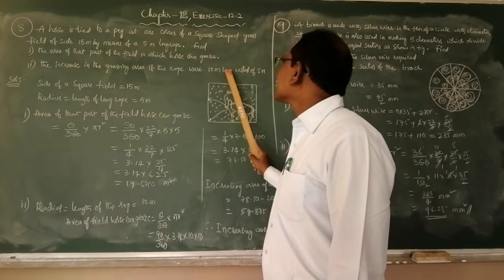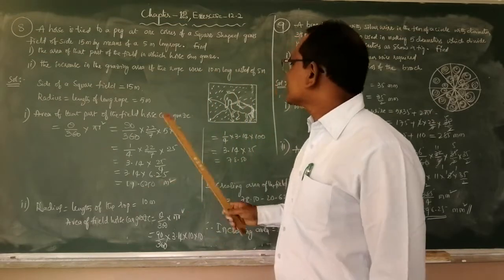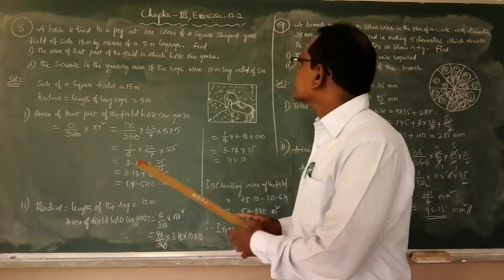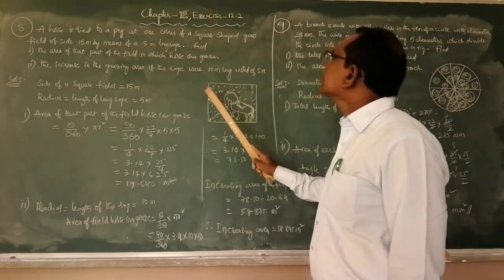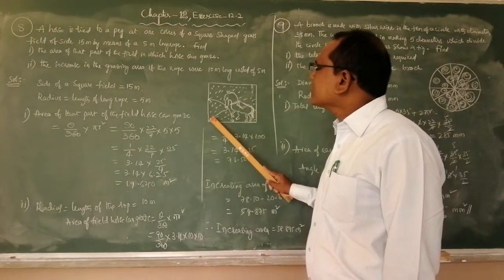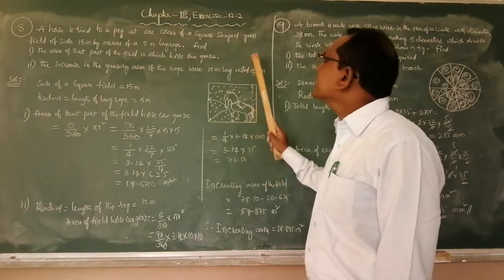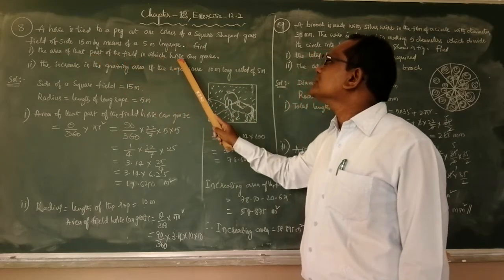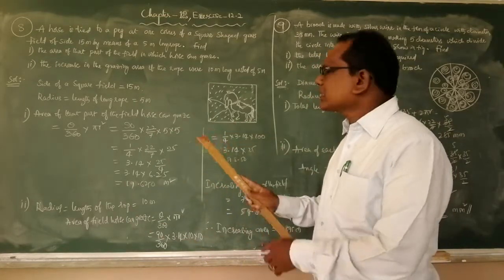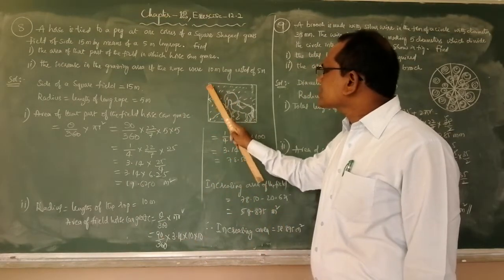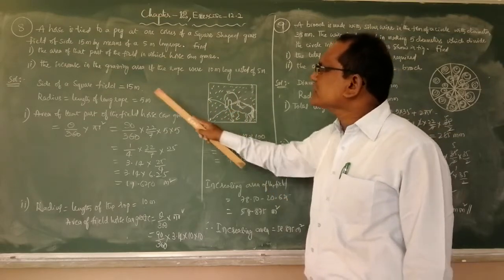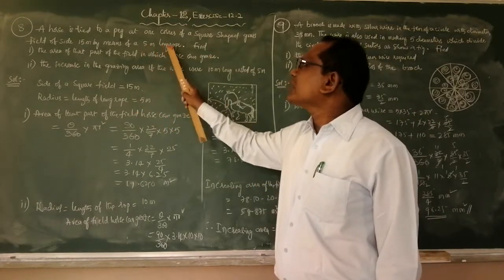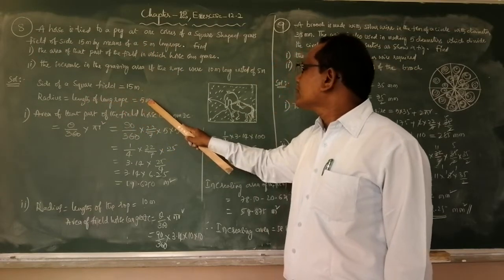Second, find the increase in the grazing area if the rope were 10 meters long instead of 5 meters. The horse is tied at one corner of the square-shaped grass field. One peg means at one corner. The length of the rope is given as 5 meters. We need to find the area of the part of the field in which the horse can graze. The side of the square field is 15 meters and radius equals the length of the rope, which is 5 meters.